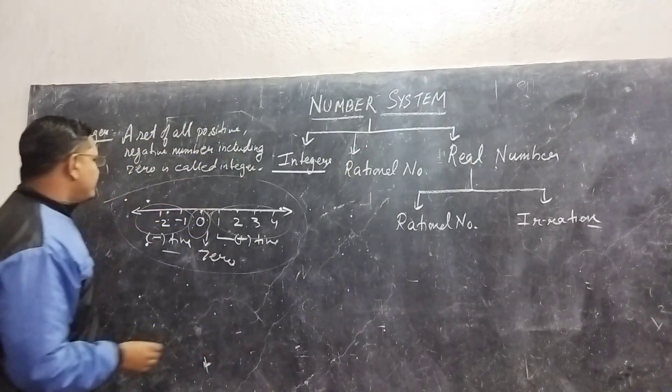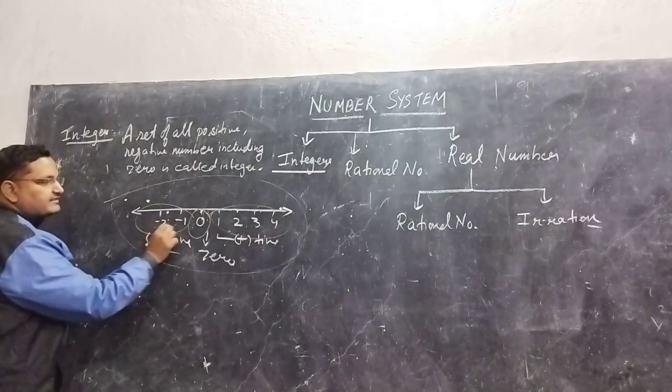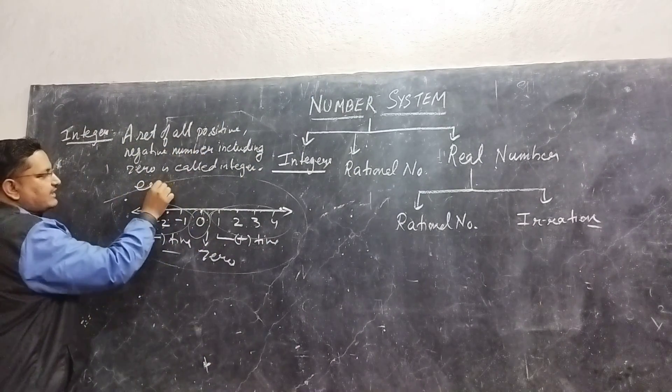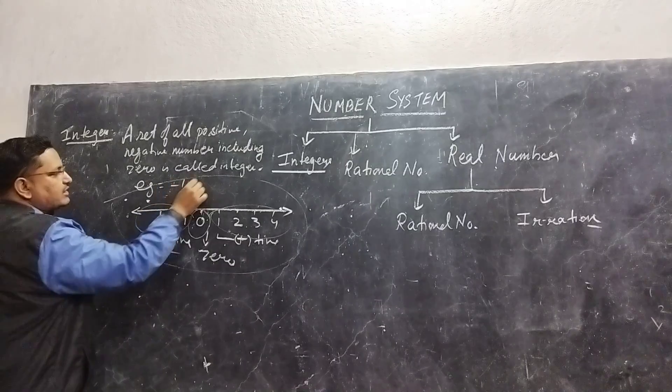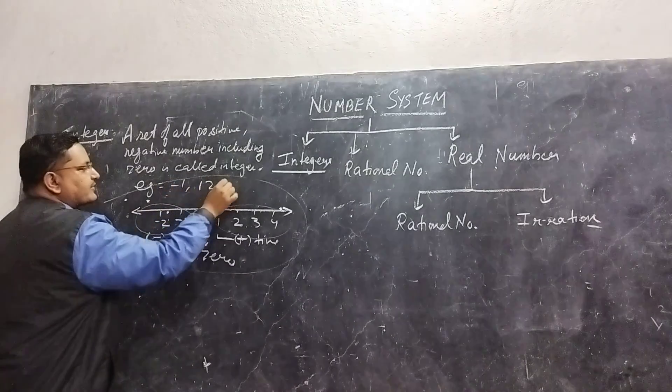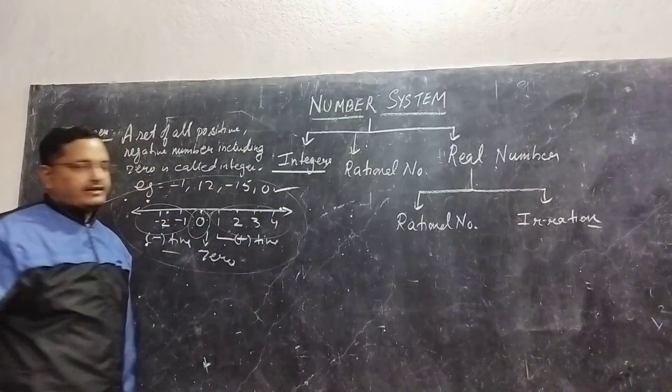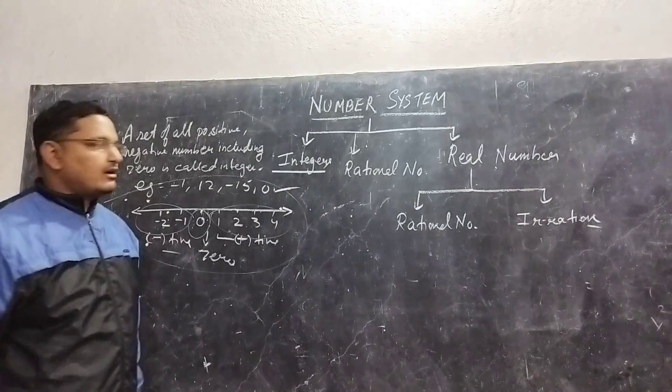If you want to write examples, these are the examples: minus 1, 12, minus 15, 0 — all these are examples of integers.